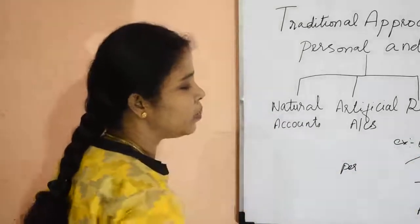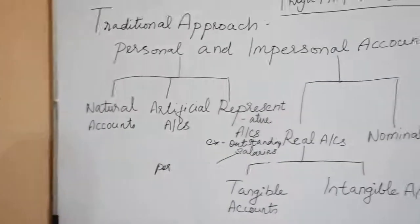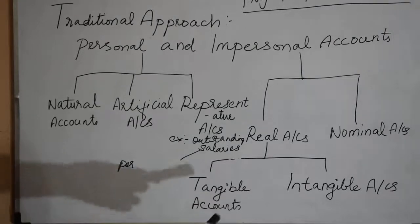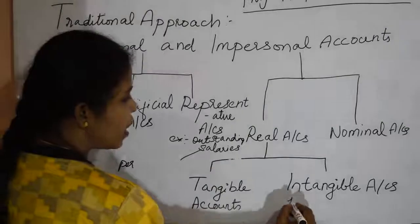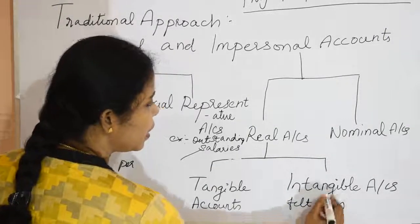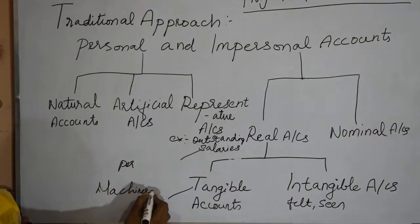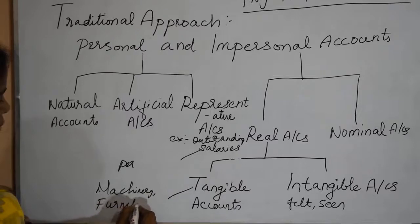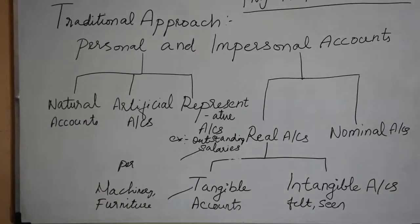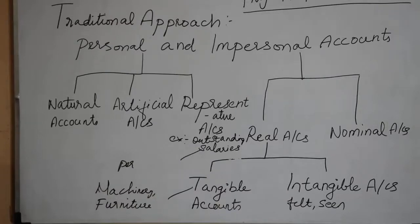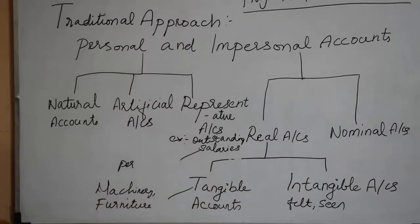Real accounts are classified as tangible accounts and intangible accounts. Tangible accounts are those which can be touched, seen, and felt — for example, machinery and furniture. Intangible accounts are those which cannot be touched or seen — for example, goodwill of the firm, which means the good name and reputation of the firm, as well as patent rights and trademarks.